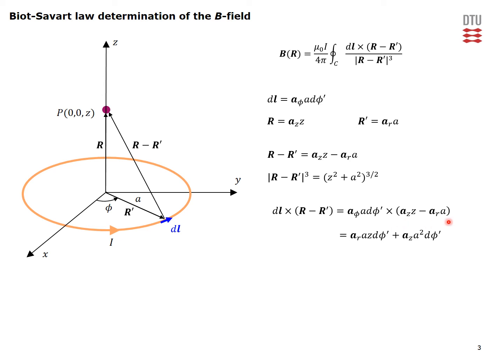This is the DL element, this is the difference vector. You have a contribution along R direction and also a contribution along Z direction. DL cross with this element will give a contribution to the field dB which will point in this direction.